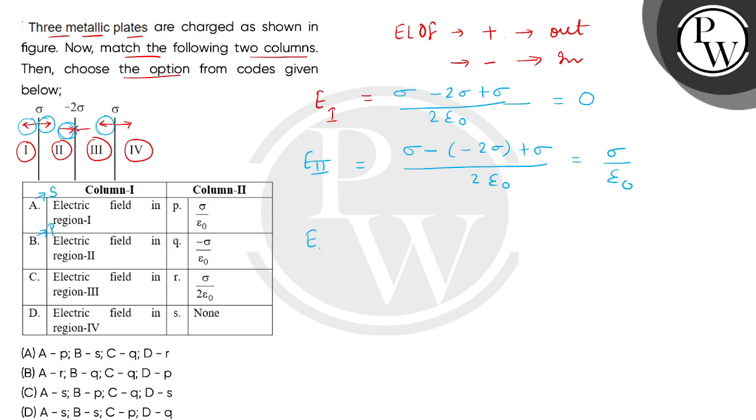Then children, when we check the electric intensity in the third field, this will be taken in the similar way: sigma minus 2 sigma minus sigma divided by 2 epsilon 0. So this answer will be minus sigma divided by epsilon 0. So children, we will get the answer here, the answer of C entry is Q.